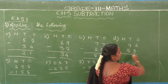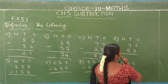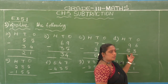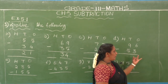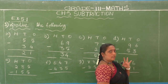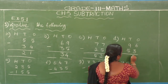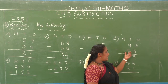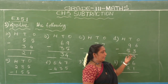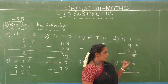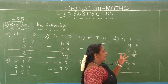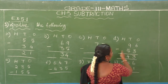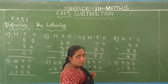D1: 96 minus 53. Ones place — second number is 3: 3 after 4, 5, 6. Difference is 3. Tens place — second number is 5, first number is 9: 5 after 6, 7, 8, 9. Difference is 4. So 96 minus 53 equals 43.